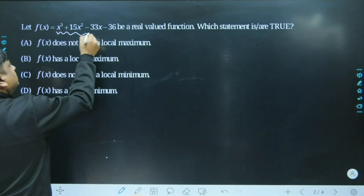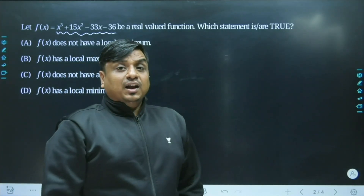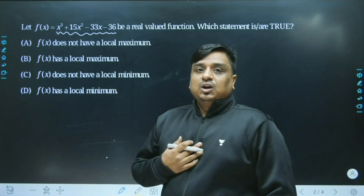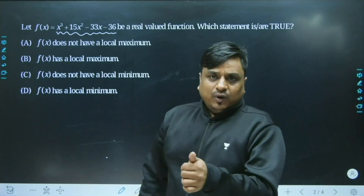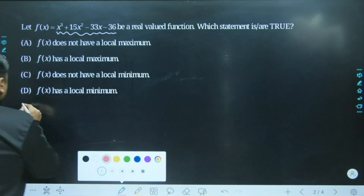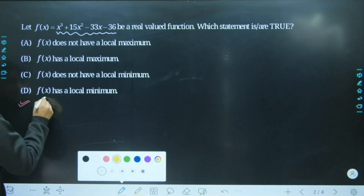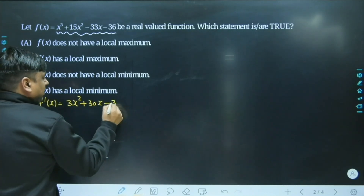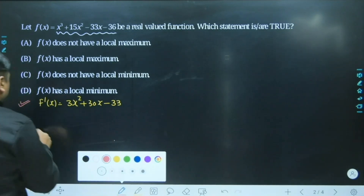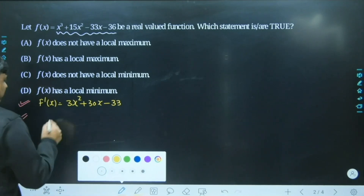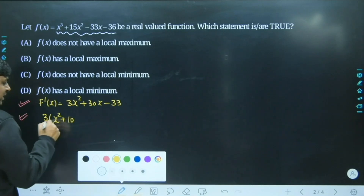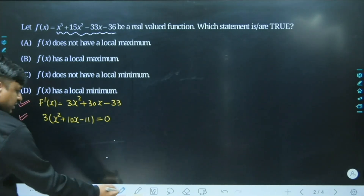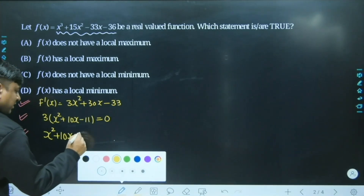This is a cubic polynomial. Once you differentiate to find its stationary points, it becomes a quadratic polynomial. Comparing the quadratic to zero gives us two roots. If the roots are real, we expect one maxima and one minima. Taking the first derivative of f(x): the derivative of x³ is 3x², then comes 30x, and the last term is minus 33. Setting this equal to zero gives us the stationary points — the points at which the slope of the function becomes zero.